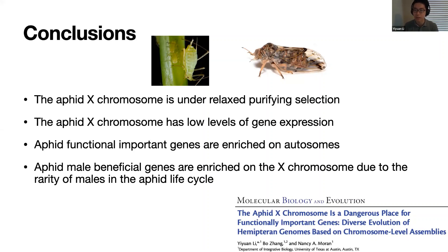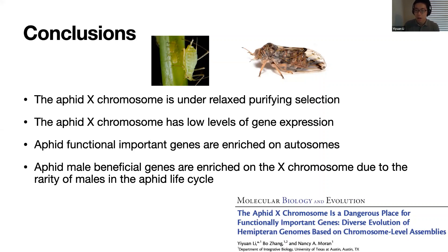In summary, for the aphid X chromosome, we found that it's under relaxed purifying selection and has a lower level of gene expression, consistent with previous theoretical models, but now proved with chromosome level genome assembly. Aphid functionally important genes — like bacteriocyte-related genes or genes highly expressed in females — are enriched on the autosomes, while male beneficial genes are enriched on the X chromosome, possibly due to the rare male phase in the aphid life cycle.